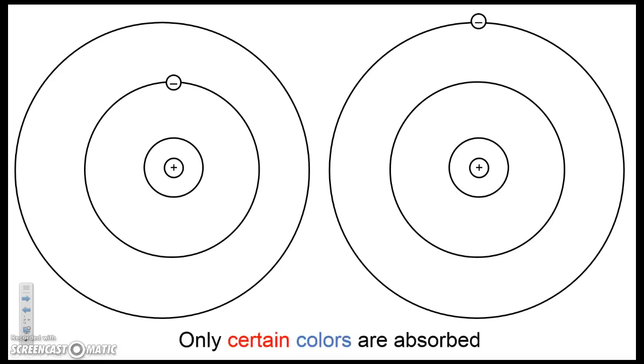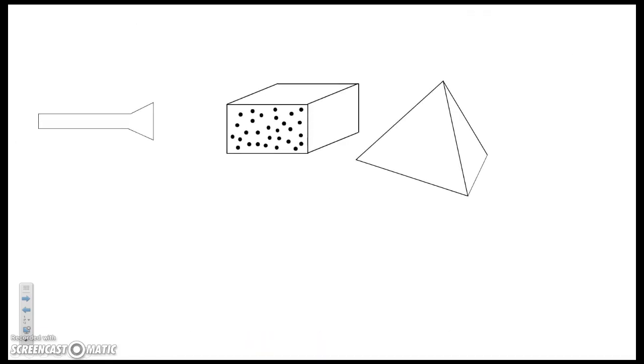The point here is that only certain colors are absorbed, and others pass on by. So now we can finally understand why the experiment works the way that it does. When you shine white light, that white light contains all colors.